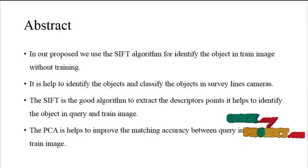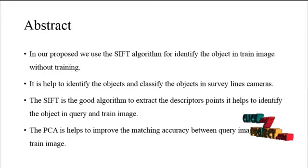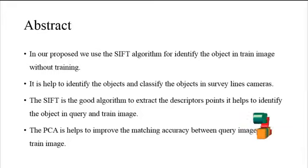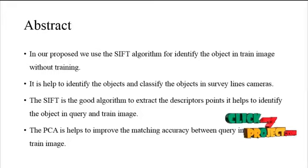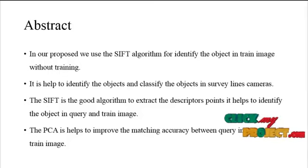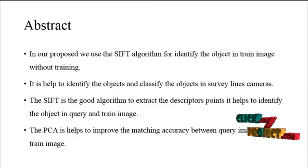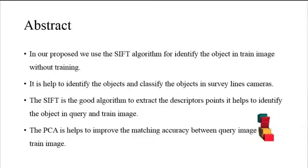First, we train the object using the train image, then we extract the BCA feature and SIFT feature for the train image. For the query image, we also extract the SIFT and BCA features. We then find the equivalent distance between the training features and the testing features, and compare both features using the equivalent distance. The minimum equivalent distance is calculated to find the object in the query image.